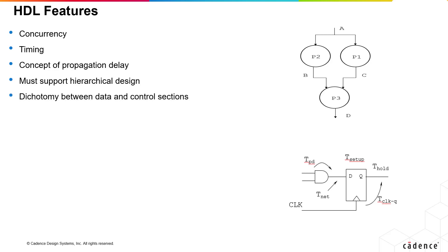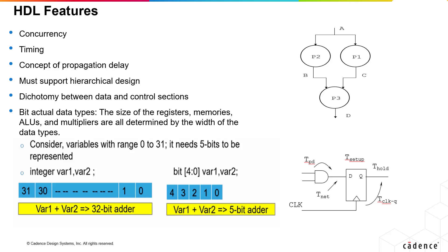Dichotomy between data and control sections are to be maintained as different optimization techniques are applied on each of this. It should have some means to specify the width of the data types as the size of registers, memories and multipliers are all determined by the width of the data types. Say, for example, we need to declare a variable with range 0 to 31. It needs only 5 bits to be represented. If we declare this variable as integer and by default 32-bit memories are allocated in hardware terms, it is a huge waste of hardware. Similarly, if we add two variables of this sort, say var1 plus var2, it requires a 32-bit adder instead of a 5-bit adder, which is highly inefficient. Hence, specifying width of the data type is highly crucial.